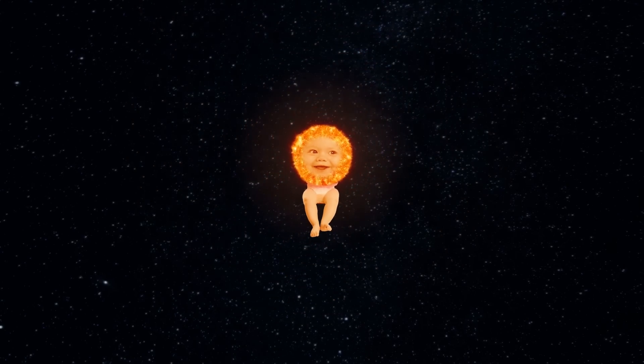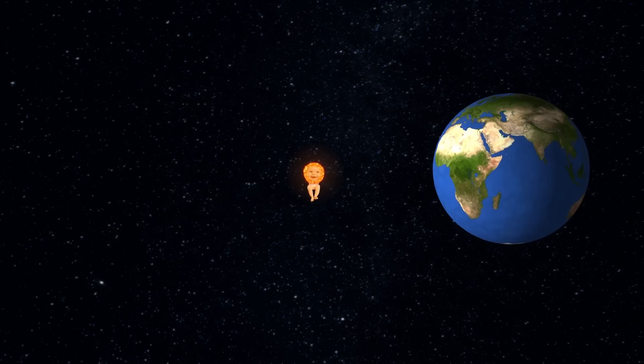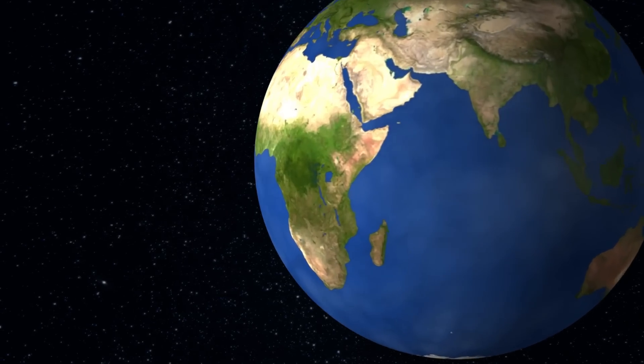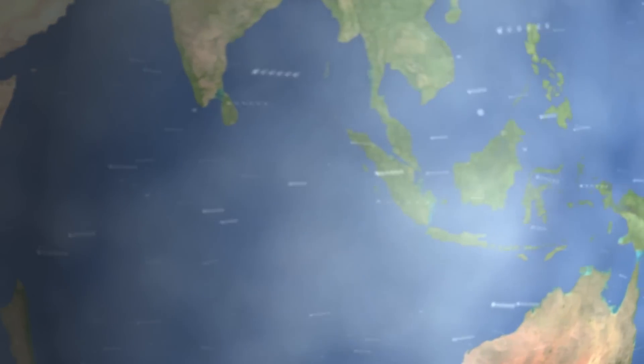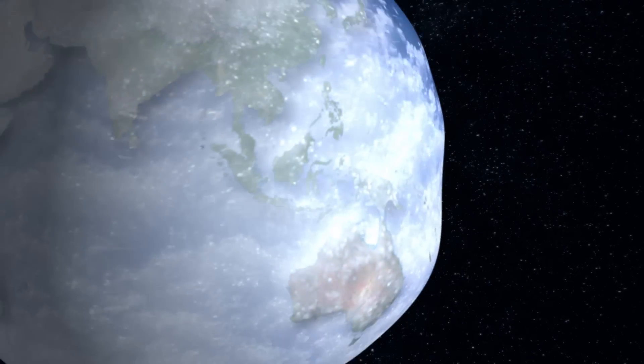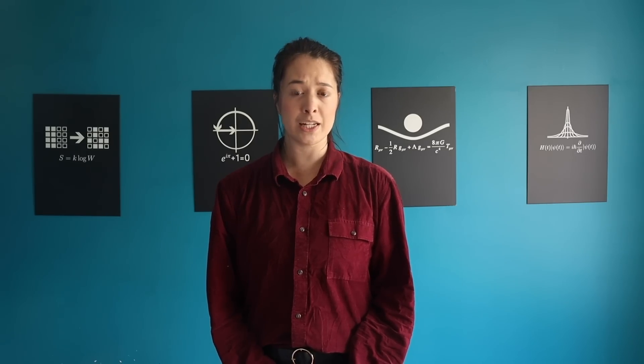But what does a smaller dimmer sun mean for Earth? Well it means it wouldn't be as warm as it is today. In fact 3.5 billion years ago the Earth should have been below freezing temperatures. In scientific terms it would have been a snowball Earth.